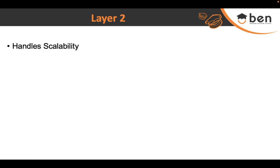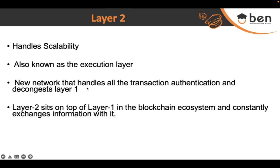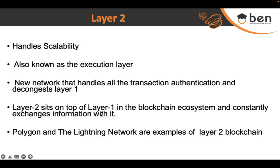Moving on to Layer 2 — because Layer 1 has a lot of work to do, it makes the blockchain very slow. To increase throughput, we have Layer 2, also known as the execution layer. It is essentially a new network layer that offloads some responsibilities from Layer 1 to decongest it — for example, handling transaction authentication. Layer 2 sits on top of Layer 1 in the blockchain ecosystem and constantly exchanges information with it. Great examples include Polygon and the Lightning Network — Polygon processes far more transactions per second than the Ethereum blockchain it sits on.